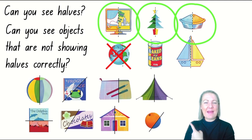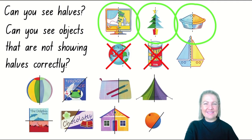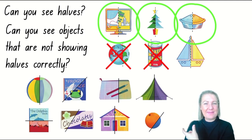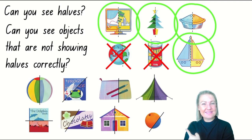What do you think about this tin of baked beans? Is the line of separation showing halves? I don't think so either. What about the picture of the boat or the yacht? Is the line of separation down the middle showing both sides as the same and equal? I'm going to say yes to that one. Let's take a look at the ball — I think it's showing halves, so let's put a green circle around that one.